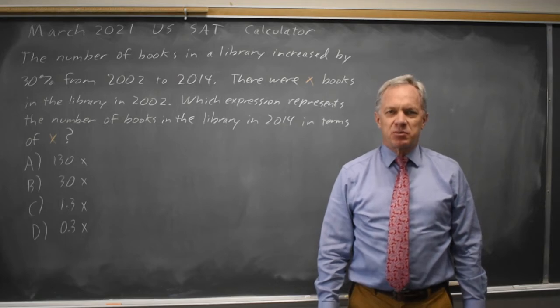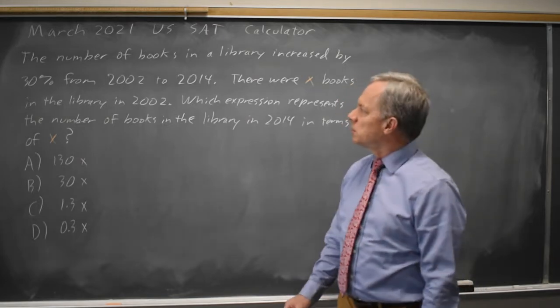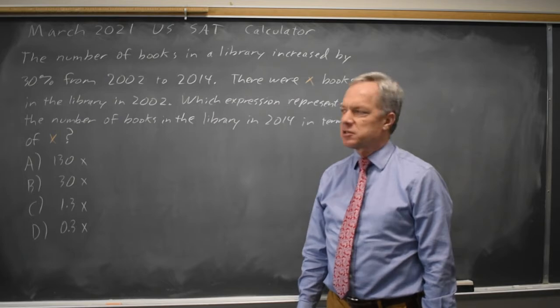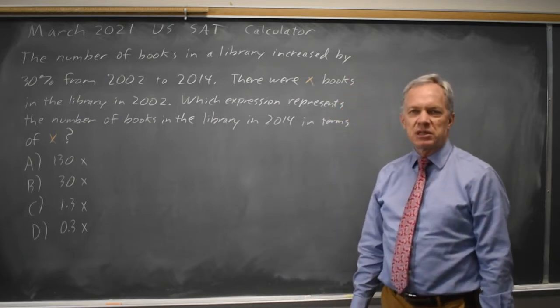I'm Dr. Roger, and this question is from the March 2021 U.S. SAT calculator section. College Board describes a library where the number of books increases by 30% from 2002 to 2014. And the question is, if X is the number of books in 2002, which expression gives the number of books in 2014?